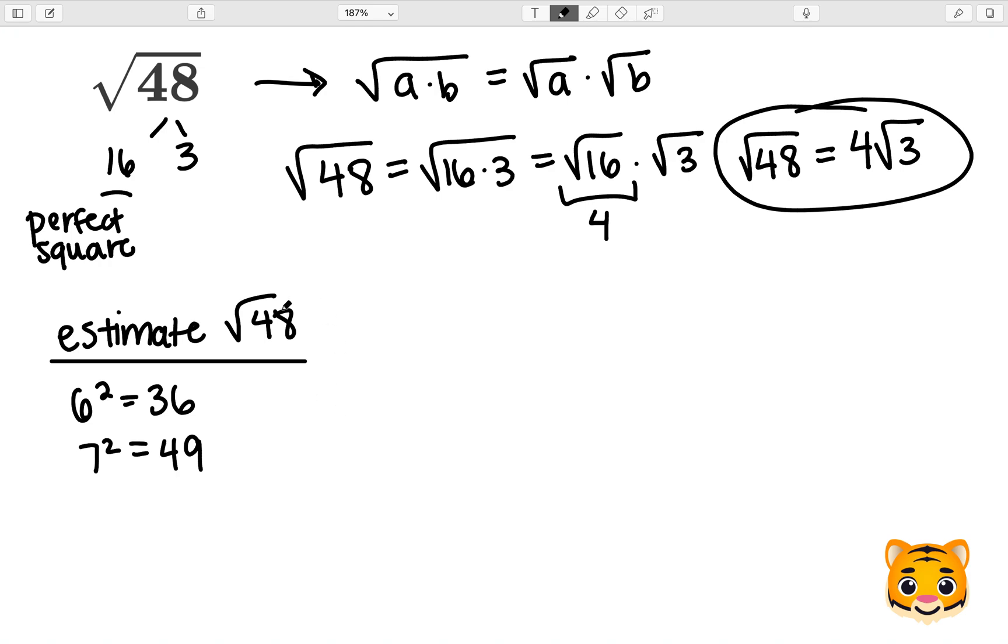As we can see, 48 lies between 36 and 49. Therefore, we can rewrite the inequality 36 is less than 48, which is less than 49, using their square roots.